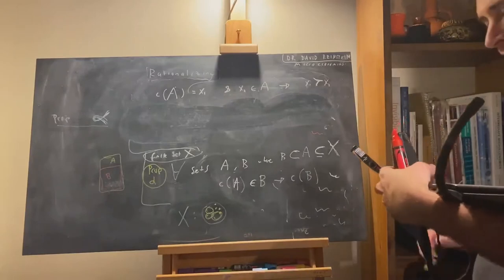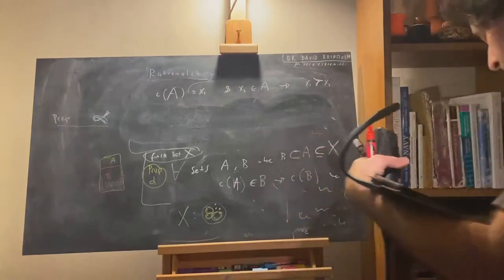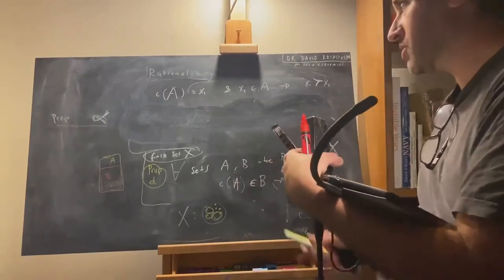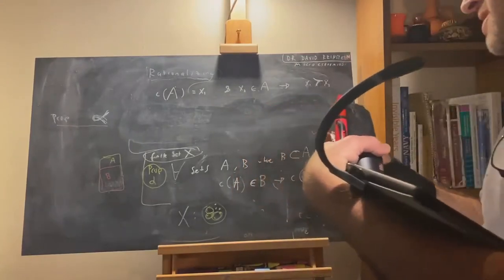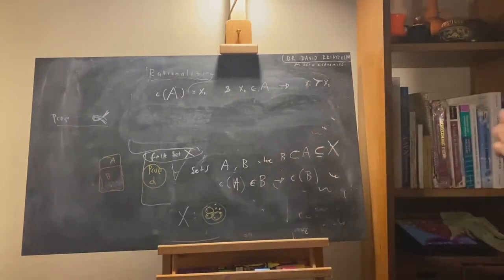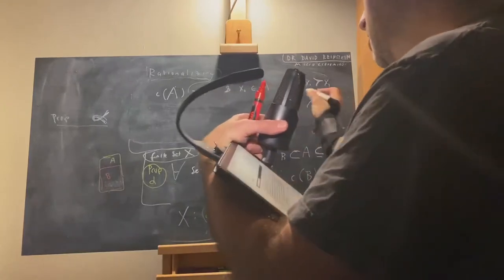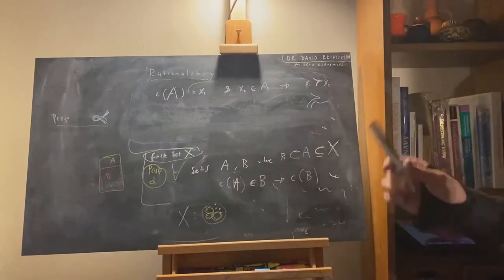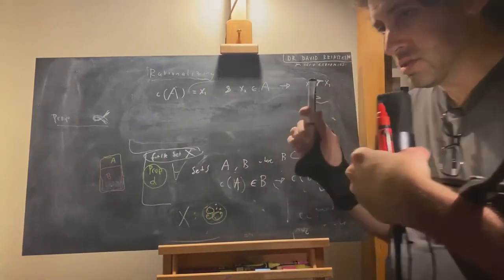We haven't proved that — I'd have to prove it's necessary and sufficient. I'm just going to focus on one direction, taking it from the Osborne-Rubinstein book. Let me first remind you what rationalizing a choice function is. What does it mean that some preference relation — which we usually express in terms of weak preference — rationalizes a choice function?